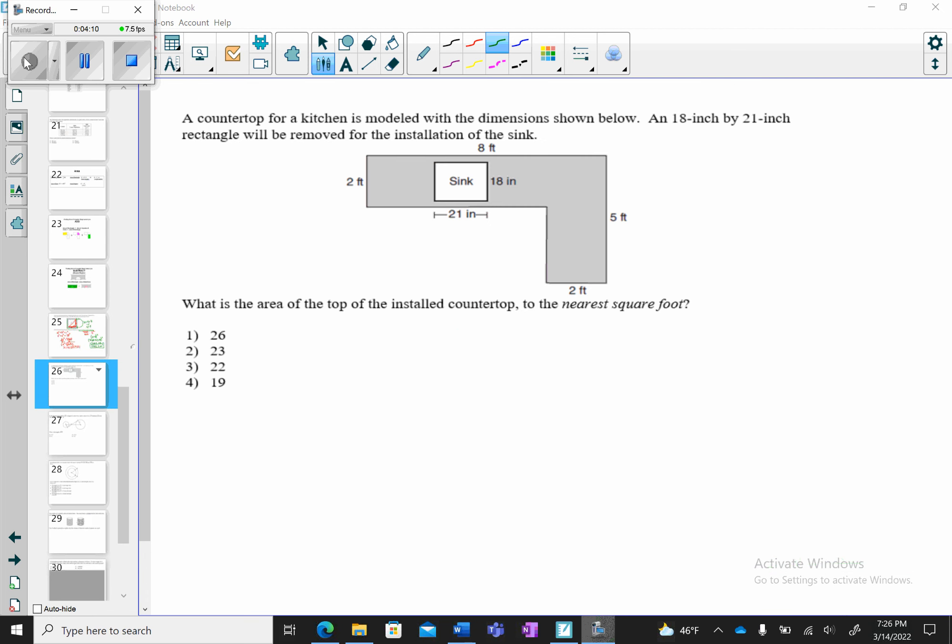Let's look at this next example. It says a countertop for a kitchen is modeled with the dimensions shown below. An 18-inch by 21-inch rectangle will be removed for the installation of the sink. What is the area of the top of the installed countertop to the nearest square foot?